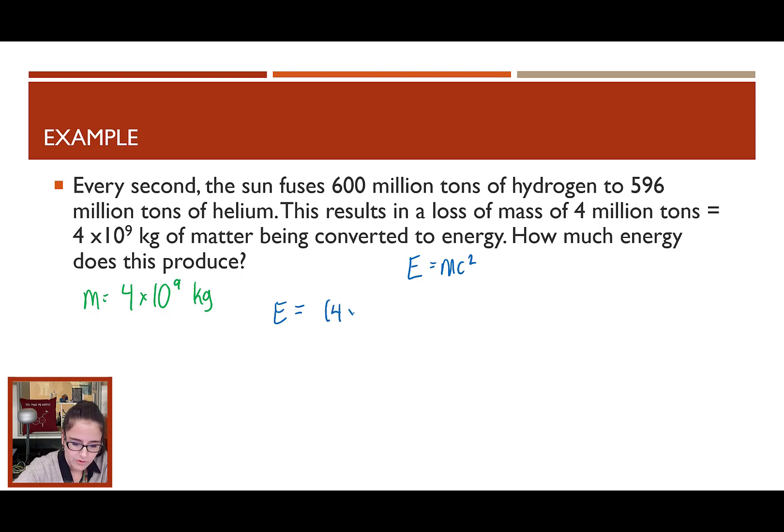So, we're going to use E equals MC squared, where the mass is the mass that is lost. So, the 4 times 10 to the 9th kilograms. And then the speed of light, which is 3 times 10 to the 8th meters per second squared. And we plug that into our calculator. 3 times 10 to the 8th squared is 9 times 10 to the 16th times 4 times 10 to the 9th, gives us an answer of 3.6 times 10 to the 26 joules of energy.